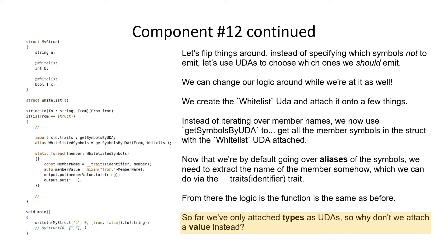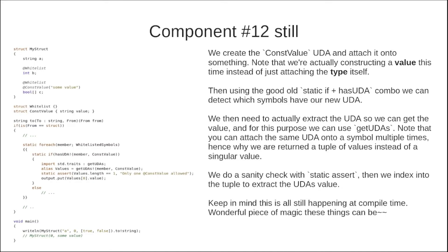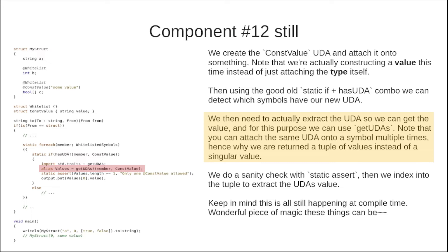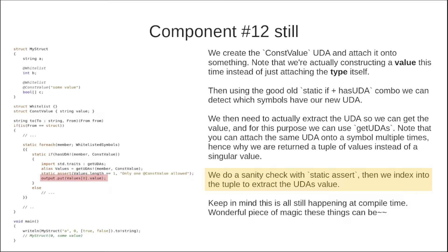So far we've only attached types as UDAs — why don't we attach a value instead. We create a ConstValue UDA and attach it with an actual value this time rather than just the type itself. Using the static if plus hasUDA combo we can detect which symbols have this UDA. We then use getUDAs to actually extract the UDA and get its value — note that you can attach the same UDA multiple times since getUDAs returns a tuple of values. We then do a sanity check with static assert before indexing into the tuple to extract the UDA's value. Keep in mind this is all still happening at compile time.